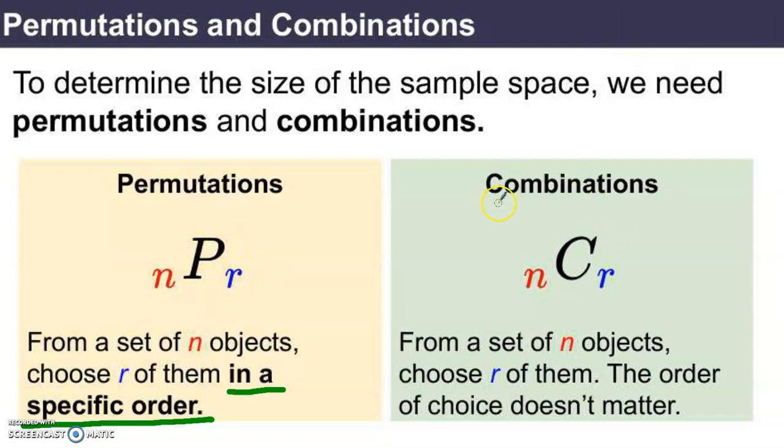Similarly, but importantly different, combinations nCr. Given this many objects, if I'm choosing this many, where the order does not matter. If the order in which I choose them doesn't change the outcome, then I don't want to use permutations, I want to use combinations.